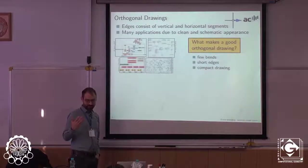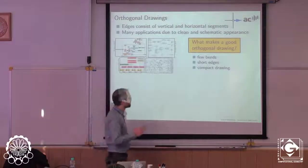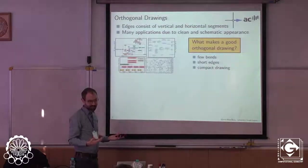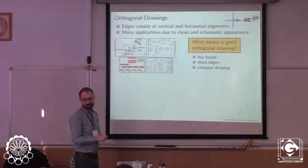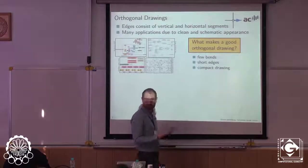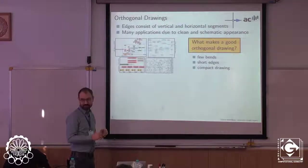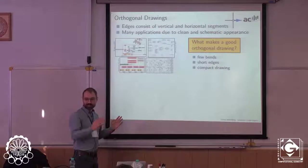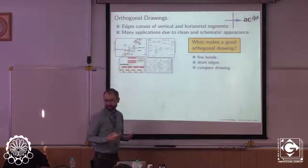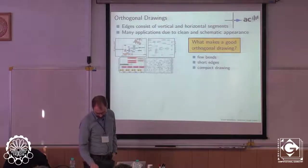The question is: if we want to compute orthogonal drawings, what do we try to achieve? The typical criteria are to use few bends — since with orthogonal edges you sometimes need bends, otherwise a vertex can only have edges in four directions — and to have short edges and a compact drawing. We apply some underlying grid so that the drawing isn't squeezed.